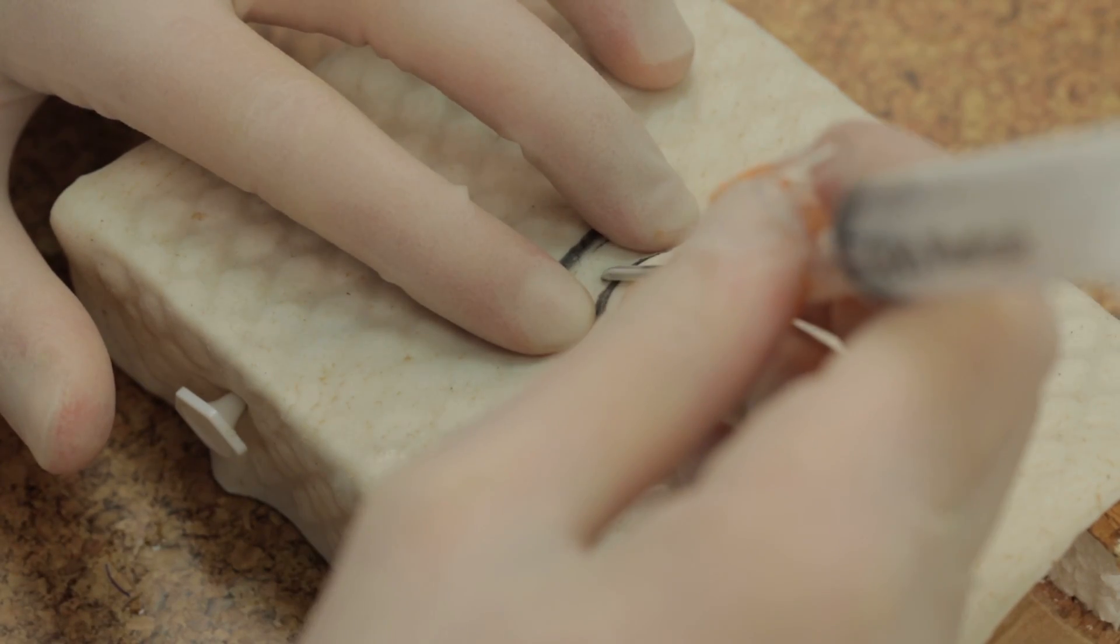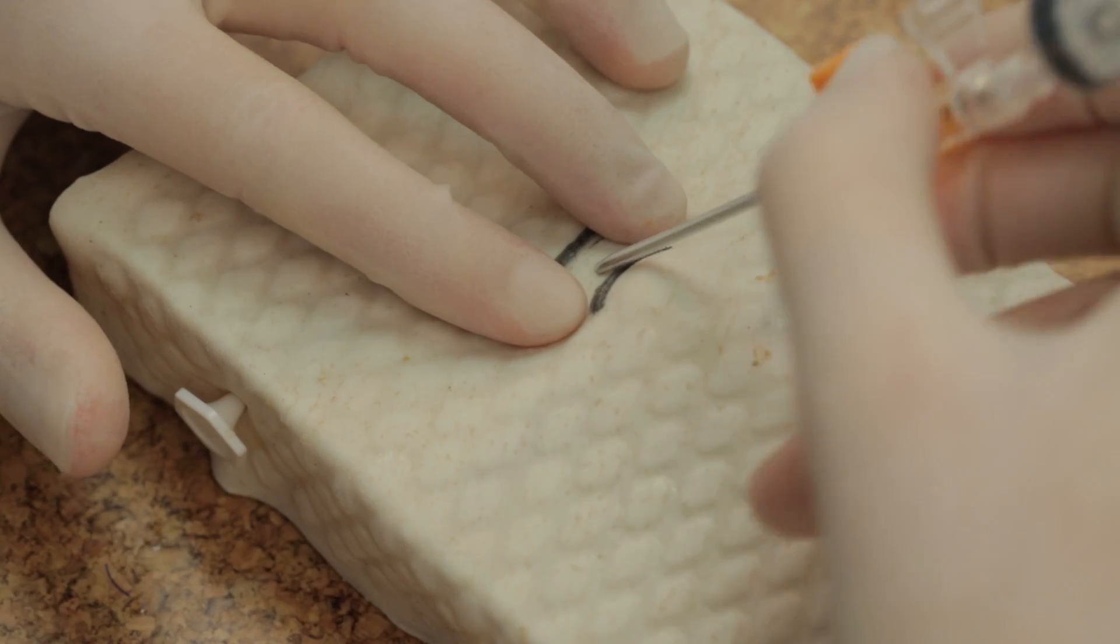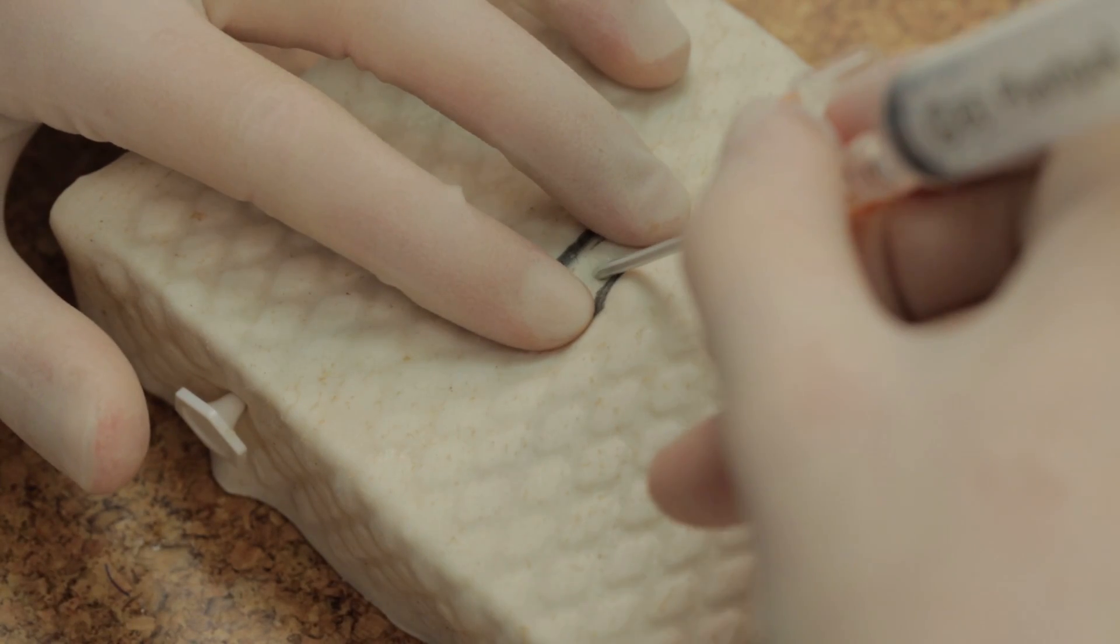Insert the cannula at roughly 45 degrees to the skin to pierce the cricothyroid membrane and enter the trachea.